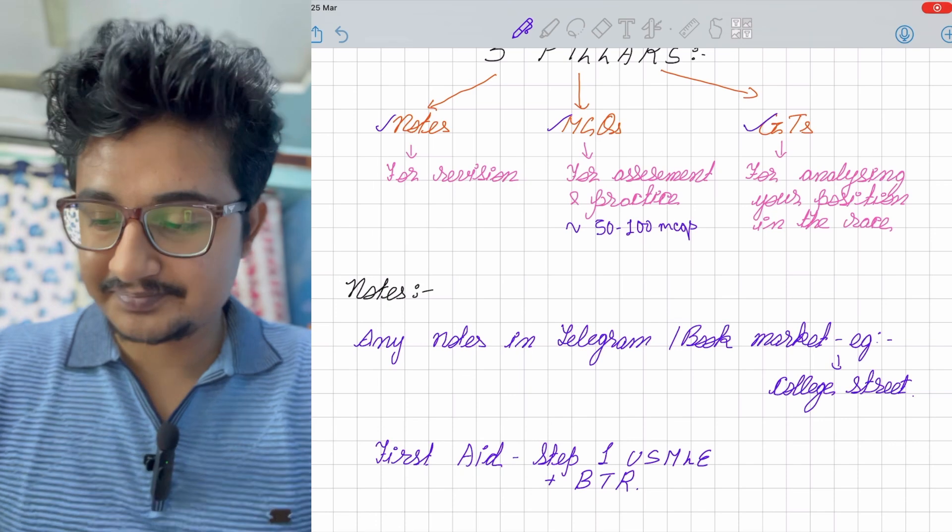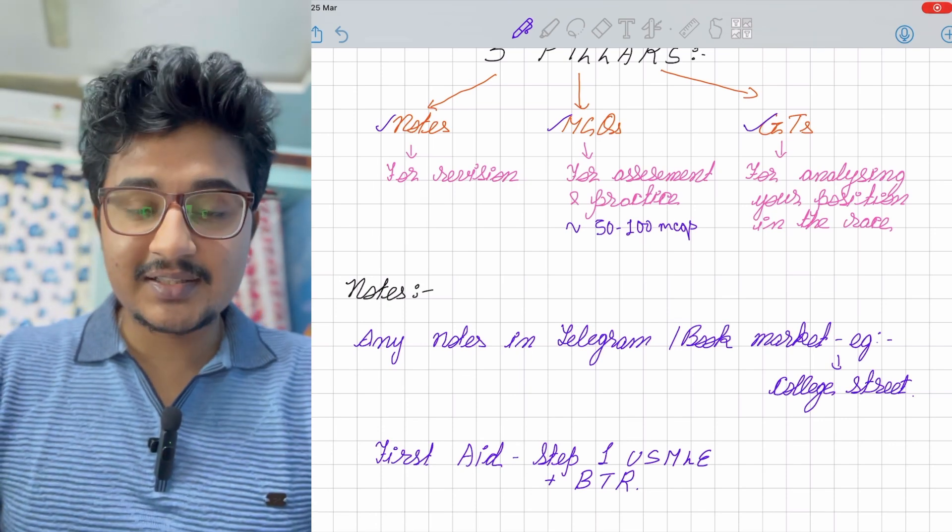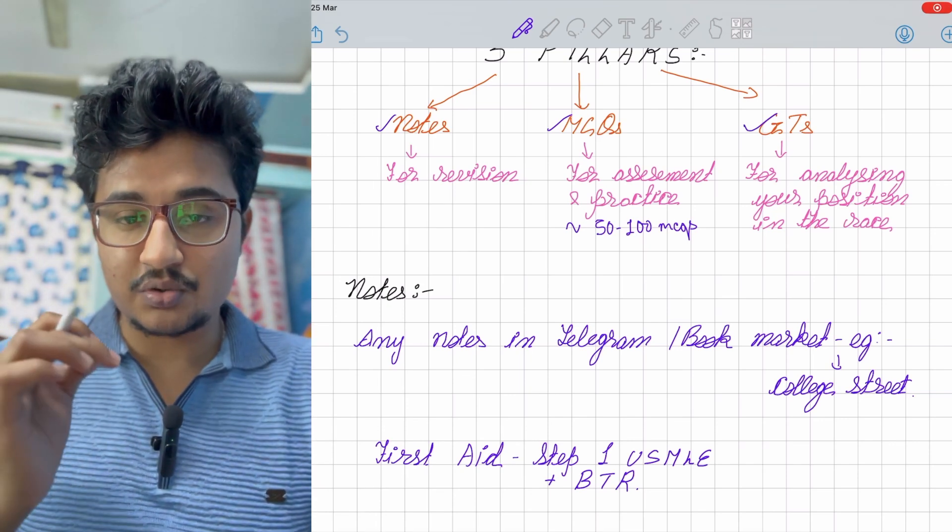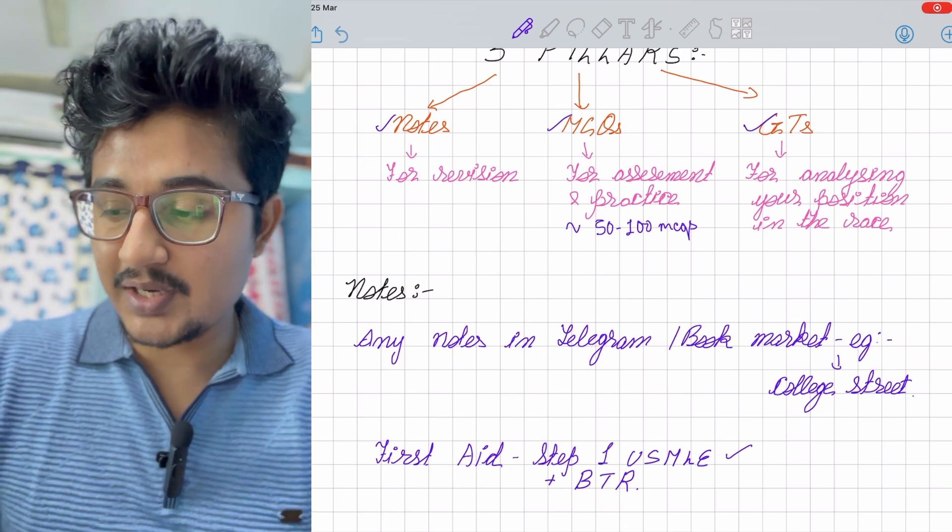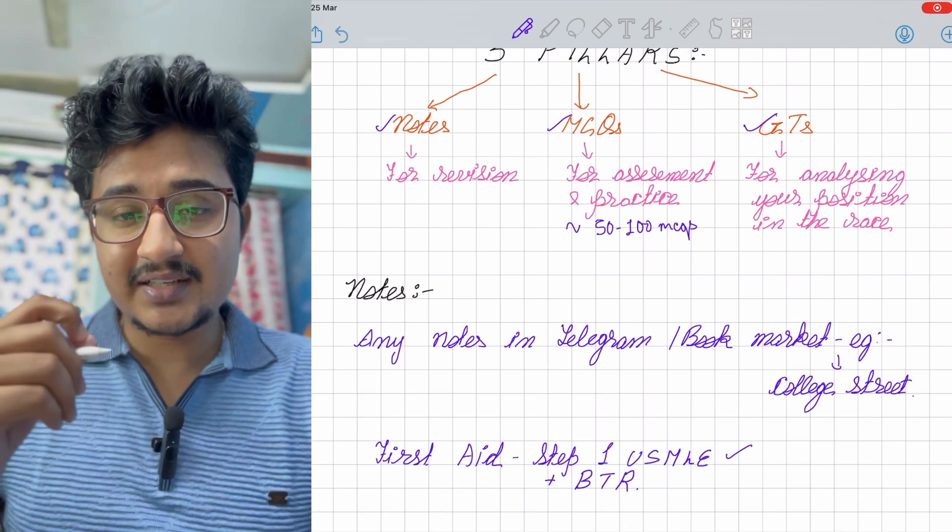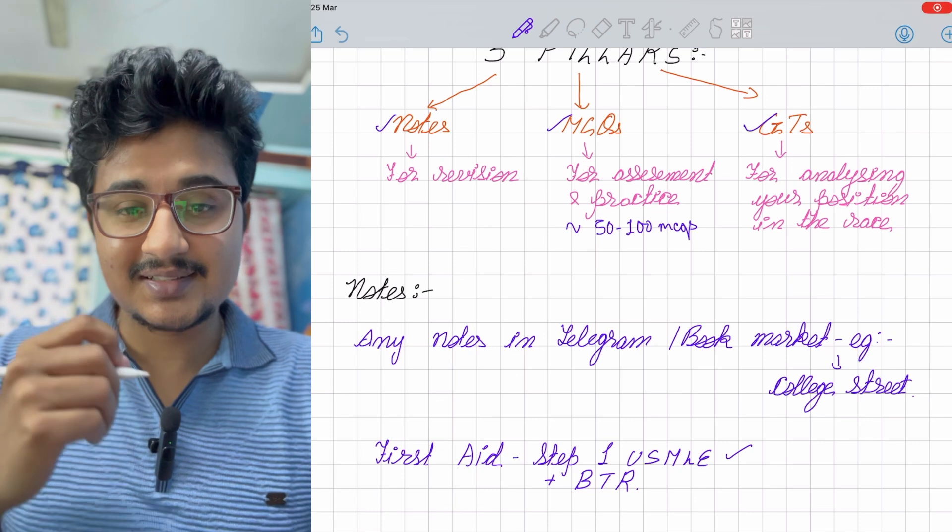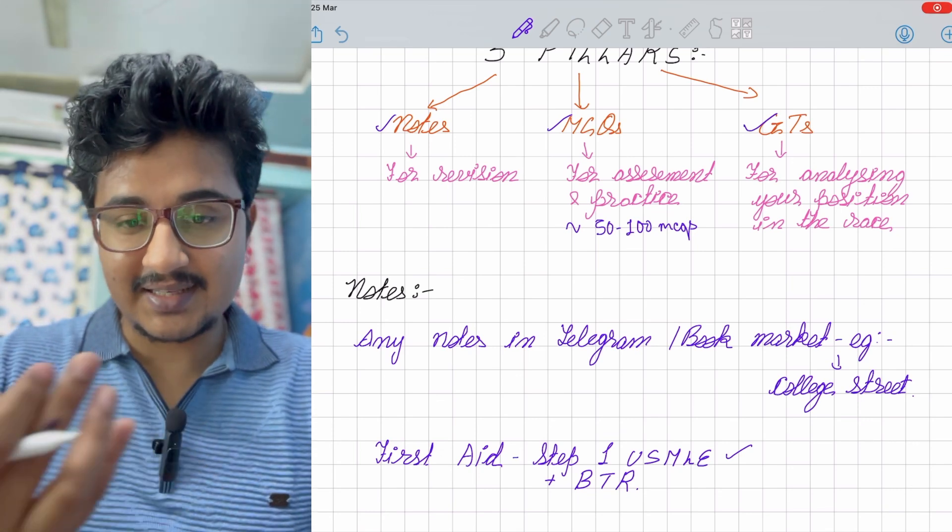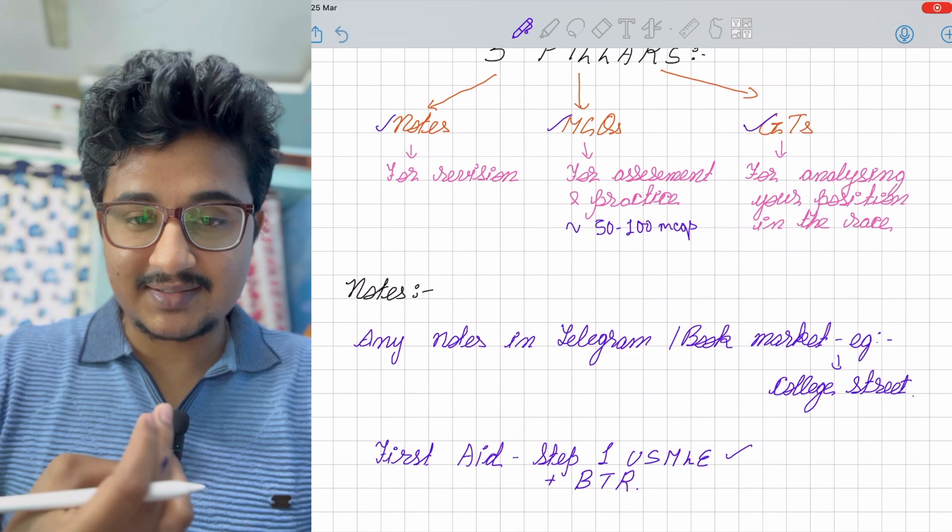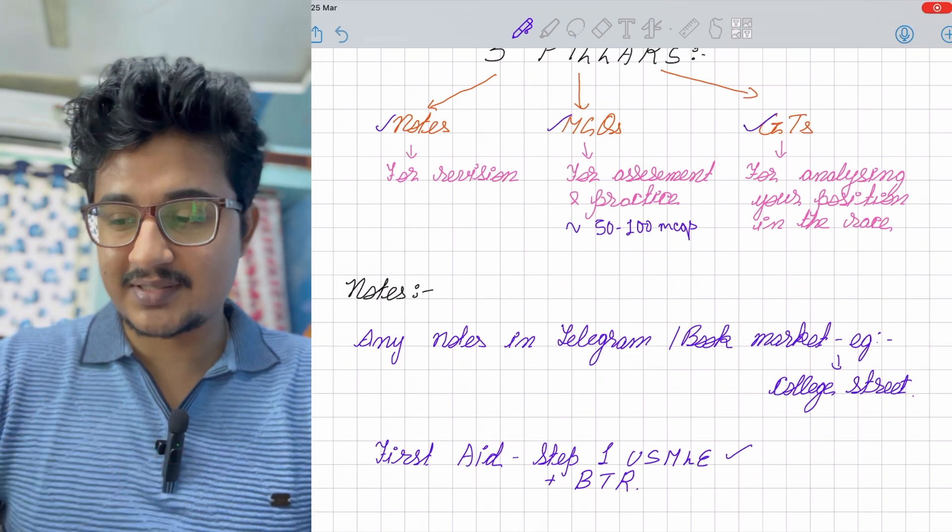Another better source if you are trying to study is the USMLE Step 1 book. If you combine it with BTR for the short subjects and subjects that are lacking, mainly gynae, community medicine, and some parts of short subjects, then it is a good source.